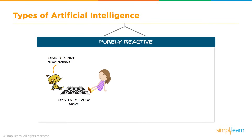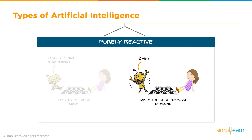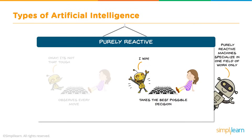It's not that tough. It observes every move — you can see a nice game of chess going on here — and takes the best possible decision. Purely reactive machines specialize in one field of work only. In this case, a chess game where they figure out the best moves, calculating all the different possibilities. Maybe it's calculating the next point in a linear regression model to figure out the best marketing. But reactive machines just have what's in front of them to look at.